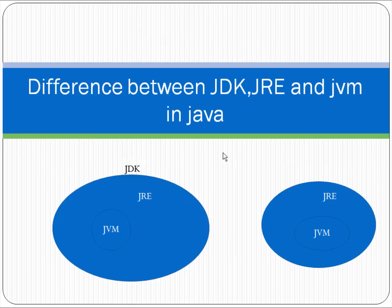Let's see the basic differences between JDK, JRE, and JVM in Java. From the first figure, we can see that JVM is a subset of JDK and JRE. From the second figure, we can see that JVM is a subset of JRE.